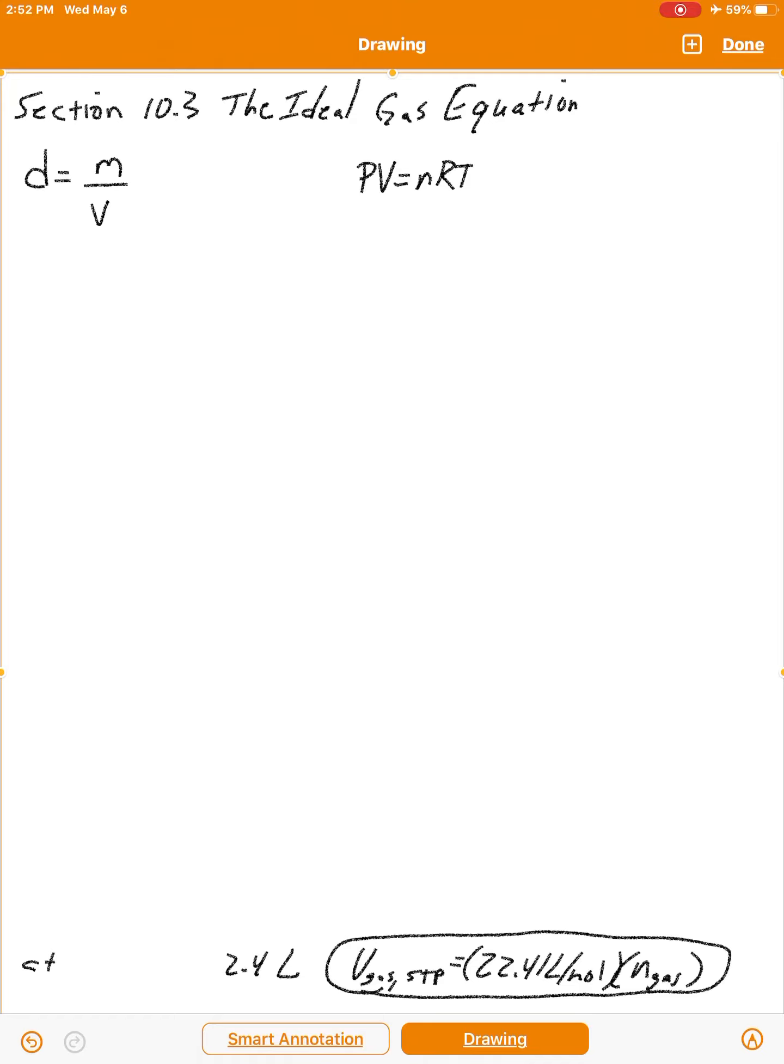Density is mass over volume and the ideal gas law, PV equals nRT. Now there's also another relationship, which is that the molar mass of a gas or of any substance is the mass of the substance divided by moles. M for mass, N for moles. So notice this has mass in it as well. Density and molar mass both have mass, but density has volume and molar mass has moles, which are two quantities, two variables, that you find in the ideal gas equation. So that's an interesting relationship. We can actually connect these three equations together.